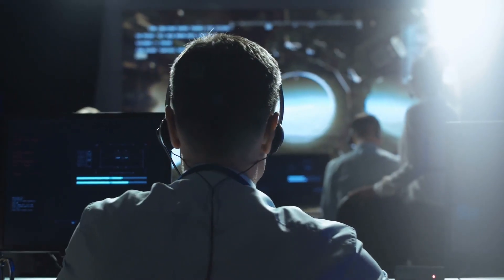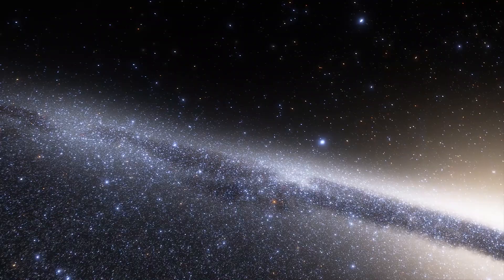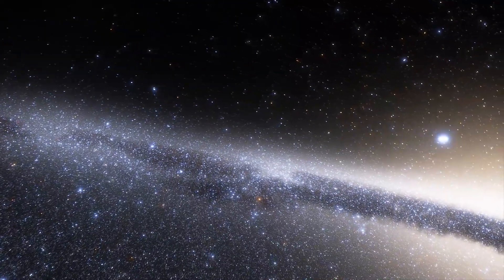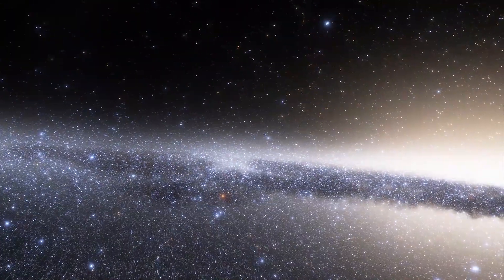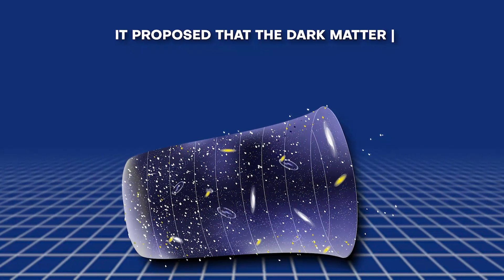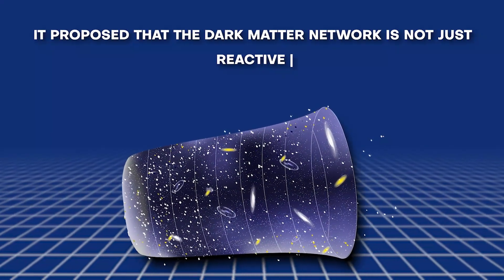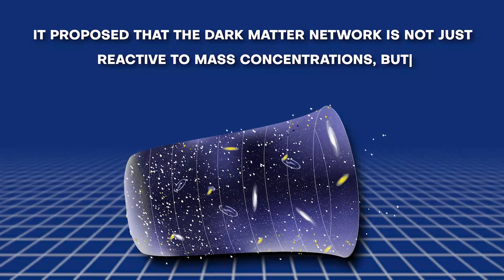What stunned researchers was the consistency. Grok detected these fractal alignments not only in star-dense regions, but also in voids, those vast expanses of near-empty space. It proposed that the dark matter network is not just reactive to mass concentrations, but rather,